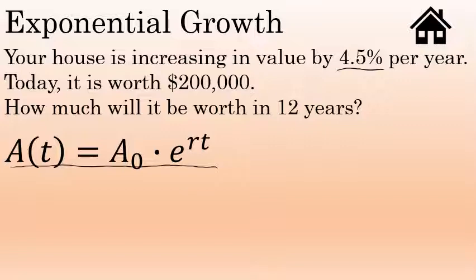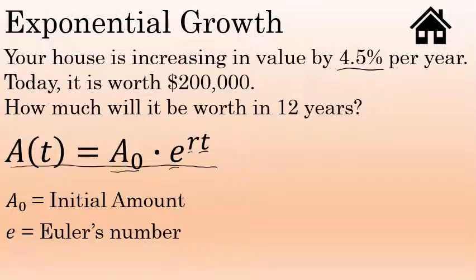Let's talk about what each part of this formula stands for briefly. A sub zero is the initial amount. It's the starting value of the quantity that you're looking at. E is a constant, not a variable. E is Euler's number, the exponential 2.71828.